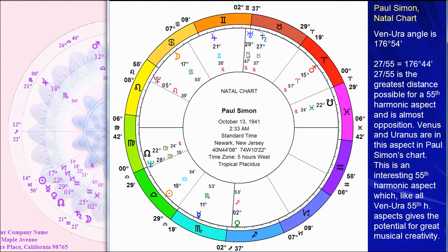We noticed that the Venus conjunct Uranus in Donovan's chart was 1/30 seconds of a circle, and it showed up in the 66th harmonic as part of a very important pattern. What's interesting here, we have an opposition with about a three-degree orb. If we run the analysis of pairs, we'll see it anyway in the 55th harmonic chart — this aspect is 27/55ths. Well, 27/55ths is as far as you can get to opposition, because if you go to 28, you've gone over halfway. These extreme aspects, where you're at the closest to opposition possible and you have a one in the numerator, often seem to have a particularly strong power in that harmonic.